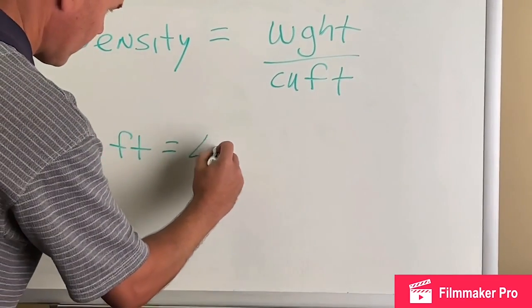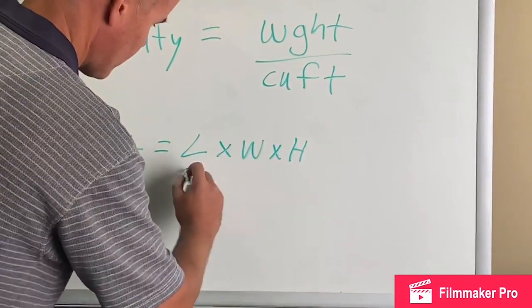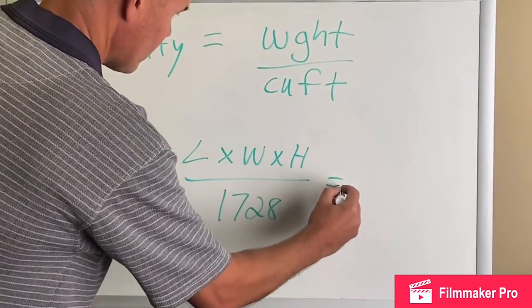Cubic feet equals the length times the width times the height of your package divided by 1728. And that equals your cubic feet,